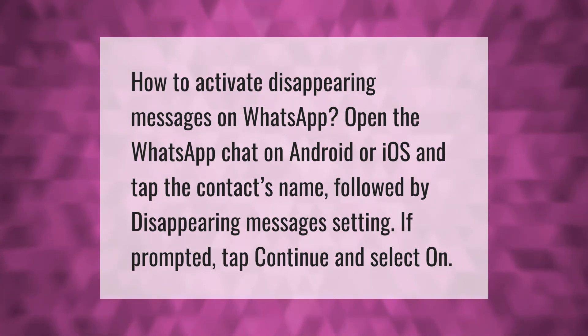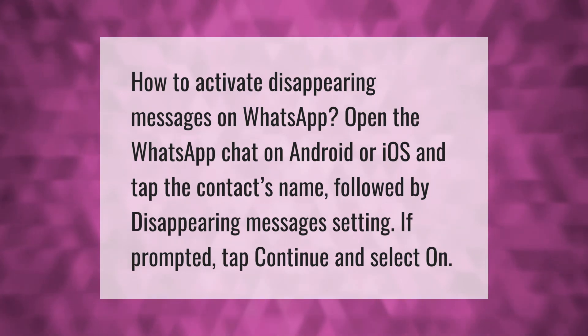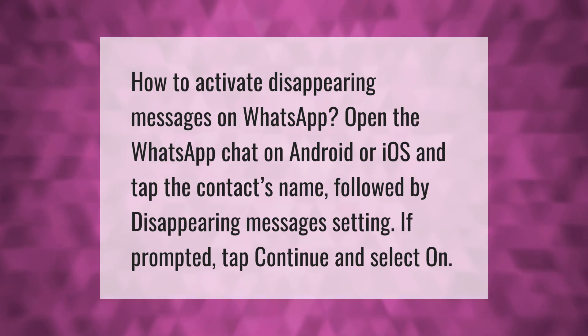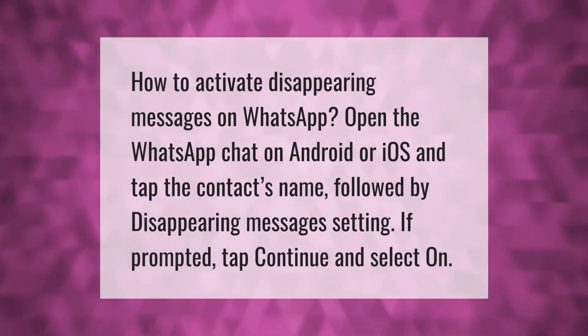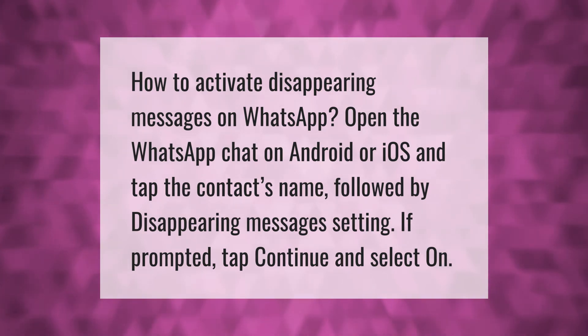To activate disappearing messages on WhatsApp, open the WhatsApp chat on Android or iOS and tap the contact's name, followed by disappearing messages setting. If prompted, tap continue and select on.